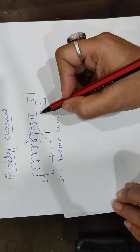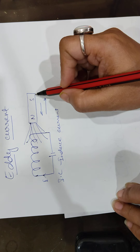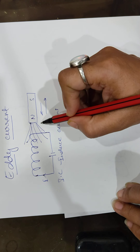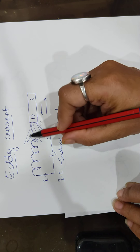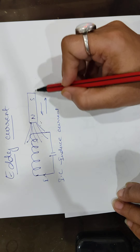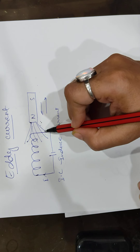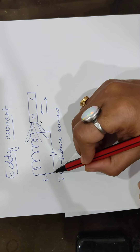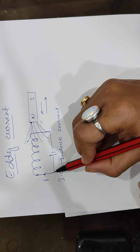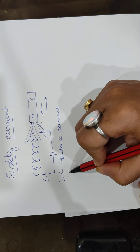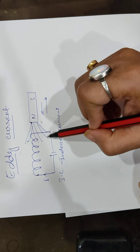Faraday said: whenever there is a change in flux due to relative motion of the magnet — when it moves forward there is an increase in flux, and when it moves backward there is a decrease in flux — due to this increase and decrease in flux, an induced EMF is set up in the coil, which also induces a current called the induced current.